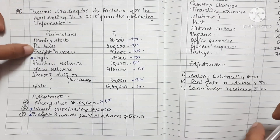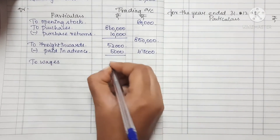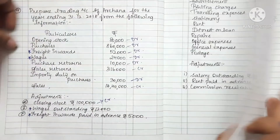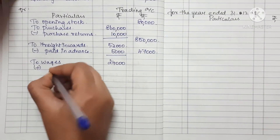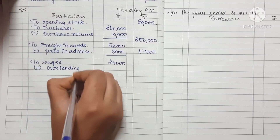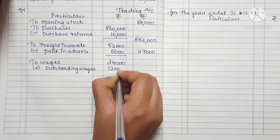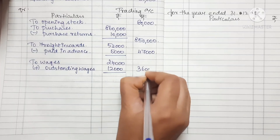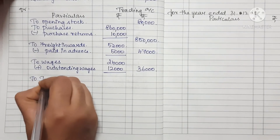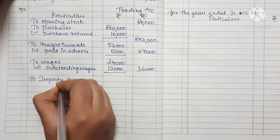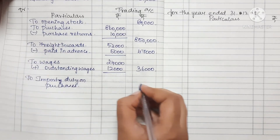Next, wages: 24,000. Now we apply the adjustment — wages outstanding is 12,000 — so we add the outstanding 12,000, giving total wages of 36,000. Next, import duties on purchases: amount is 30,000.